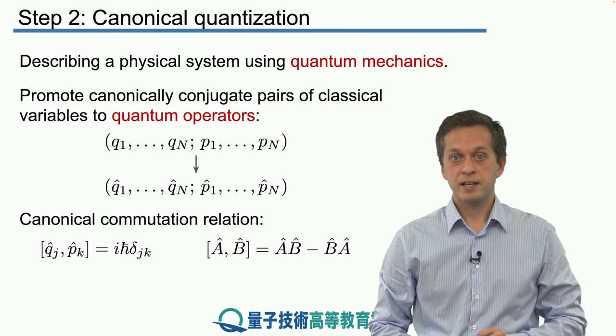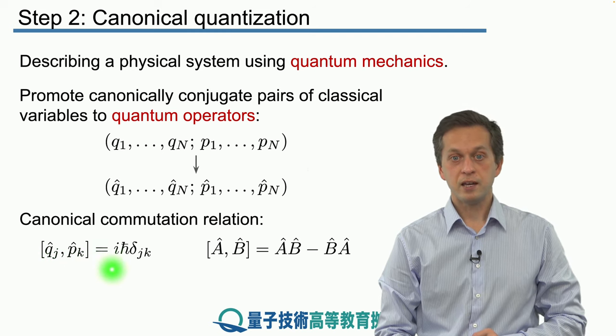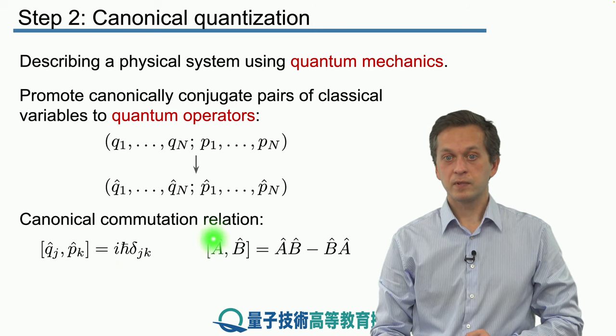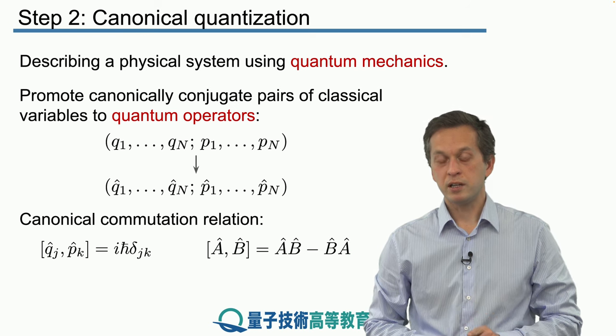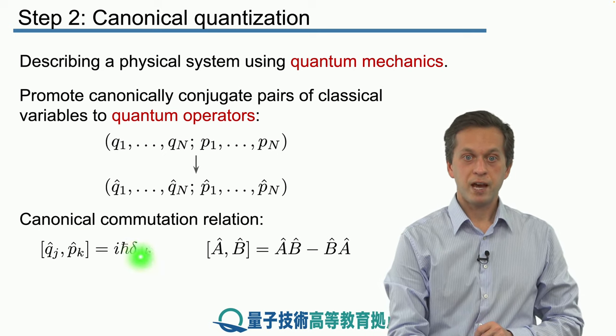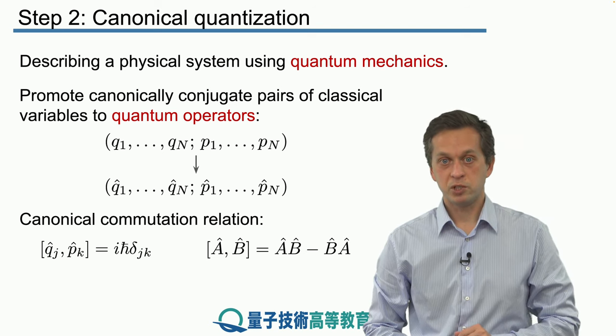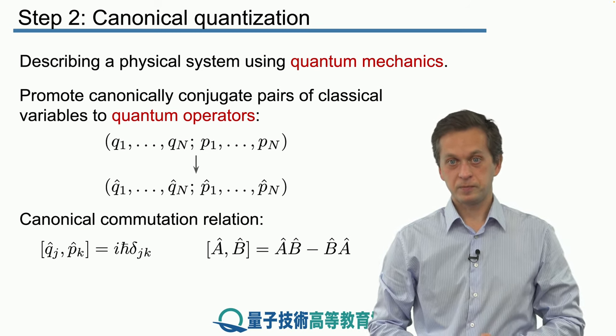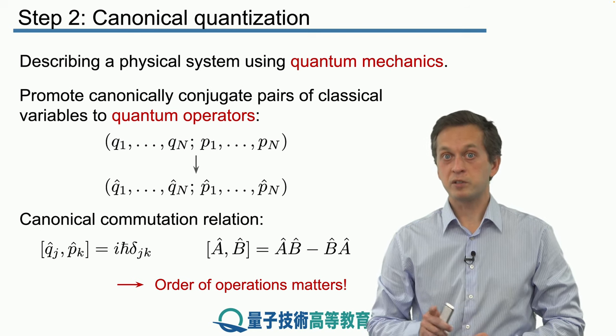And the crucial important thing is that these operators obey the following canonical commutation relation. The commutator of qj and pk is equal to ih bar times delta jk, where the commutator is defined as the following. The commutator of some operator a and some operator b is given as a times b minus b times a. So immediately we see that the order in which the operators are acting is important. We cannot just interchange it. In particular, if we have k equal to j, so delta jk is equal to 1, we see that qj times pj minus pj times qj is equal to ih bar. This is important. If there's one thing that you remember from the first step, this must be it. So, the order of operation matters, and this will have huge consequences for many observables as we will see in the next couple of lessons.